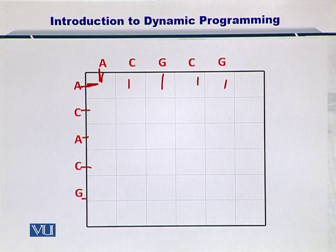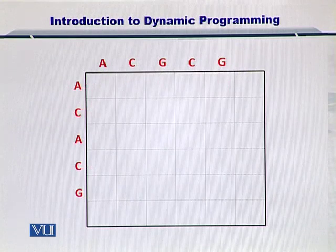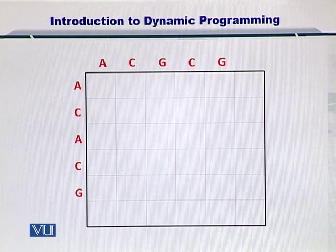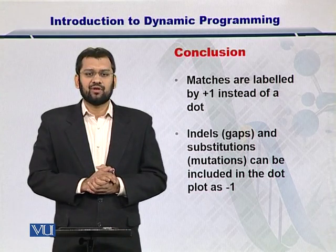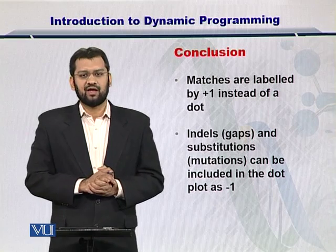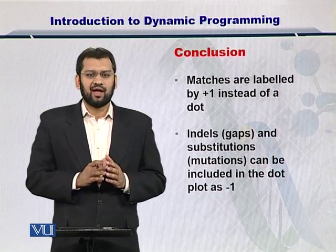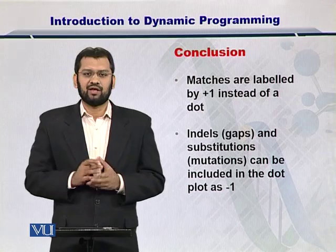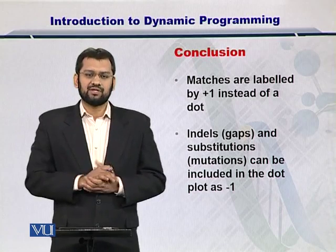To review: earlier, these nucleotides were positioned at the grid corners; now they are positioned in the middle of the grid points. After positioning the sequences at the center of the grid points, we also need to incorporate insertions, deletions, and mutations or substitutions. Matches are indicated by plus one, and mismatches and substitutions are indicated by minus one. Moreover, gaps can also be incorporated in such a plot.